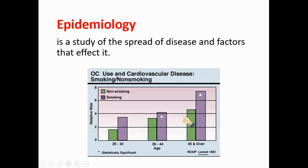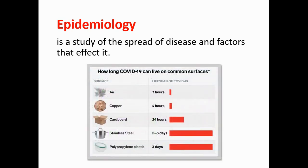As it's shown in the graph, smoking people are more often exposed to cardiovascular diseases than non-smoking ones. Here is another example: how coronavirus spreads also depends on how long it lives on different surfaces. Epidemiologists give us this valuable information to prevent us from getting infected. Now we can see why it is so important to wash our hands frequently, because even if you don't contact with an infected person directly, you can be touching objects used or touched by them.